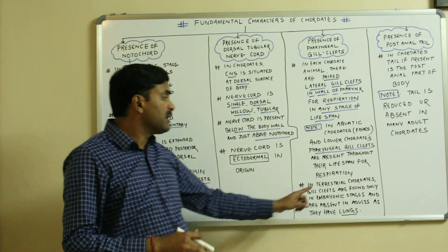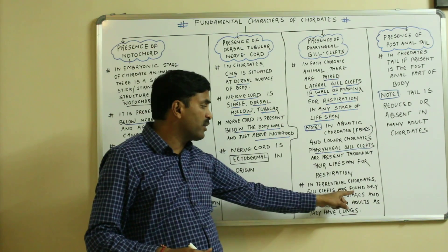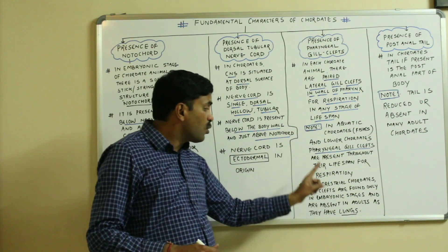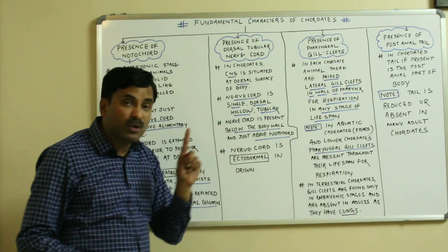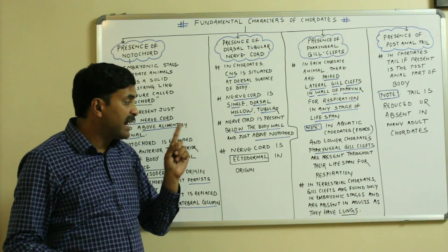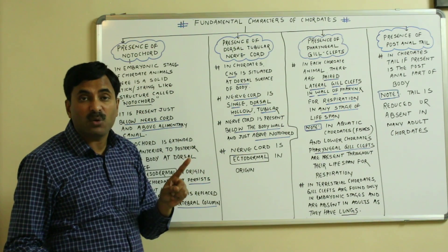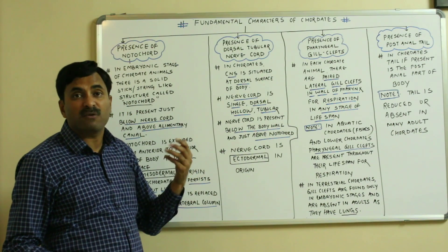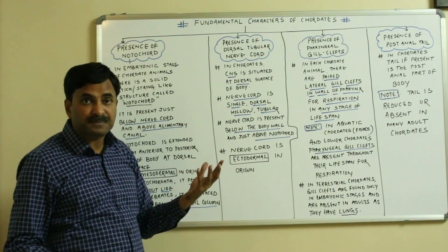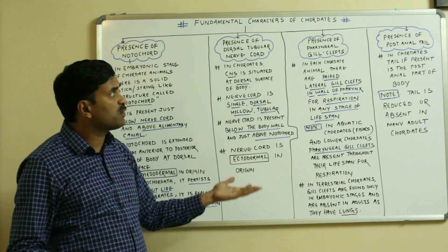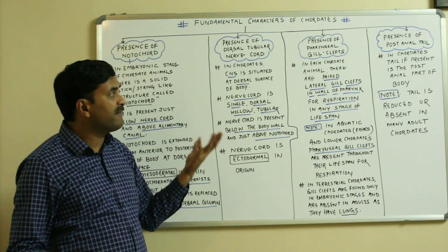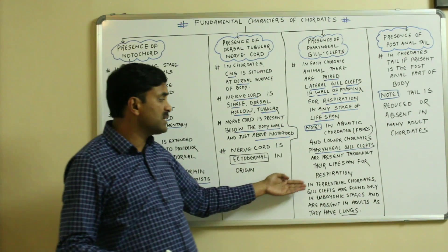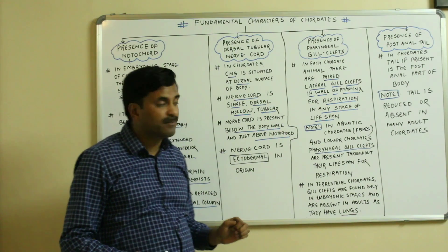In terrestrial chordates, the gill clefts are found only in the embryonic stages, and in adults they are absent. This is because in adults, lungs are present for the purpose of respiration. So we can say that gill clefts are found only in the embryonic stages in terrestrial chordates.